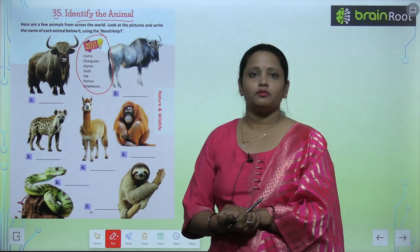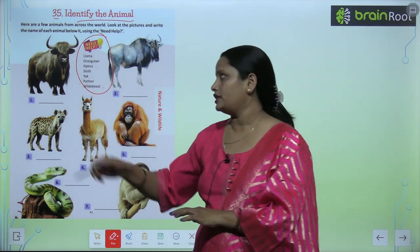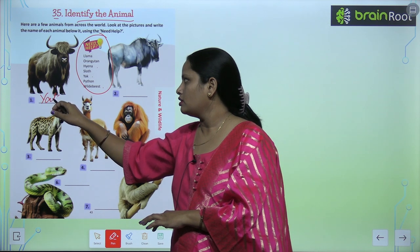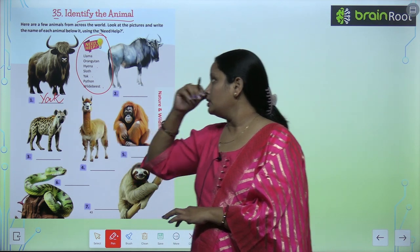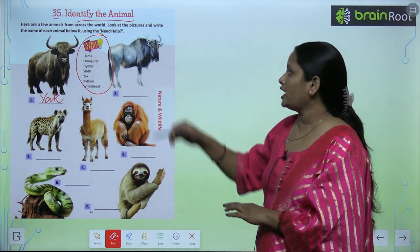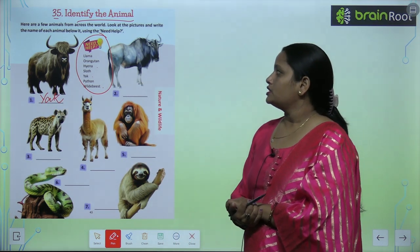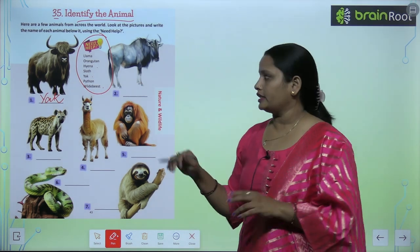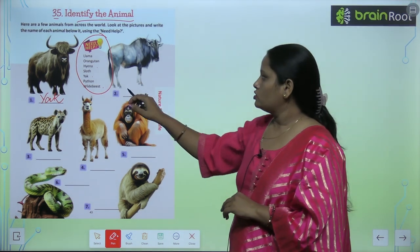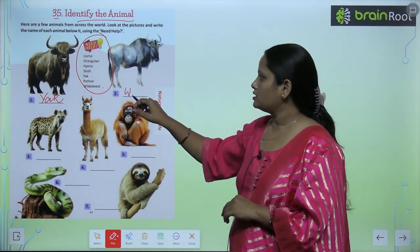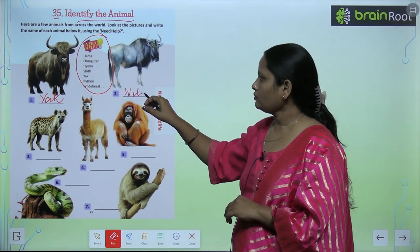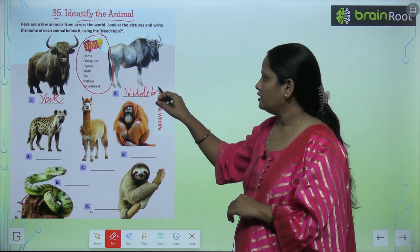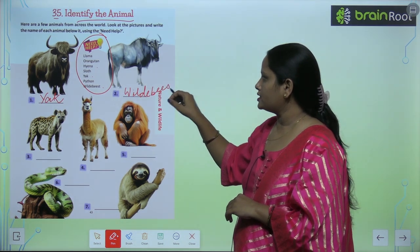This animal is yak. Now the second animal — you can see it as a wolf. So this is wildebeest.